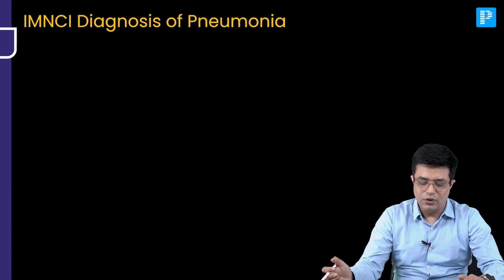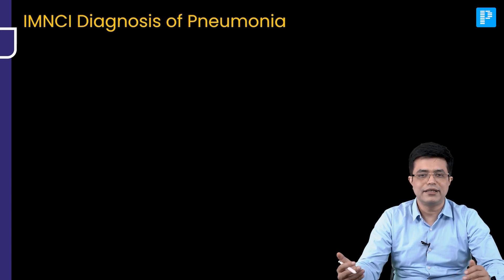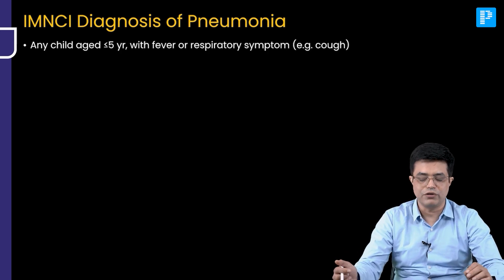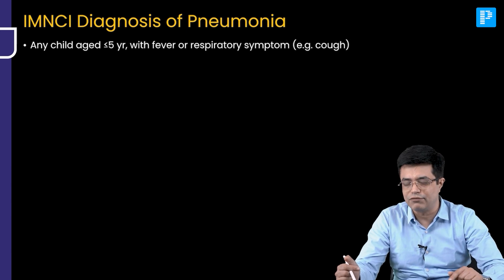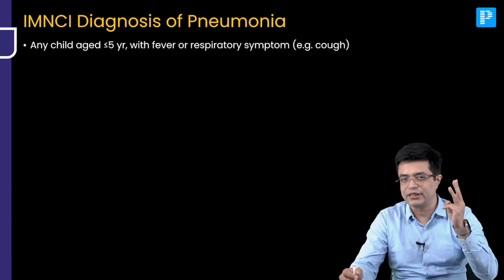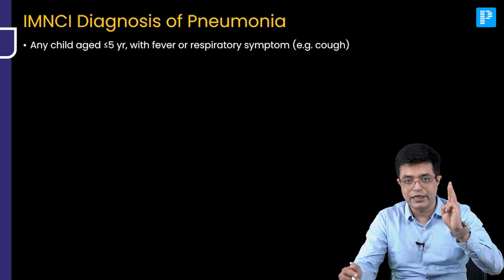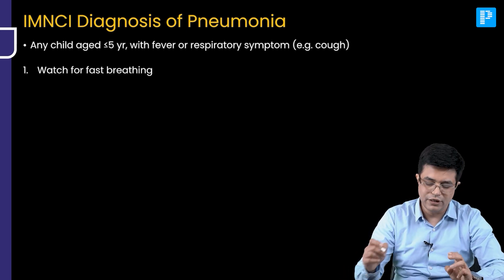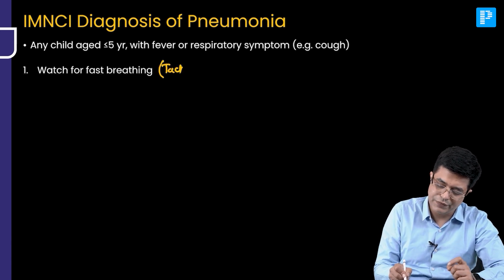How do you make the IMNCI diagnosis of pneumonia? IMNCI stands for Integrated Management for Neonatal and Childhood Illness. These guidelines say that for a child less than five years of age presenting with fever or respiratory symptoms like cough, the diagnosis should be made clinically. We check for three things: fast breathing, chest indrawing, and danger signs. Fast breathing is also known as tachypnea.